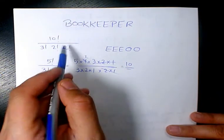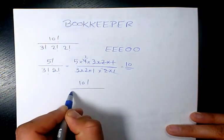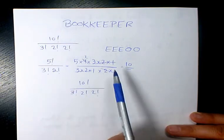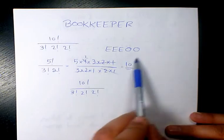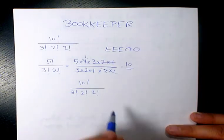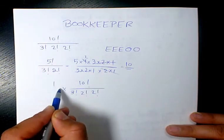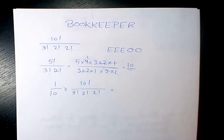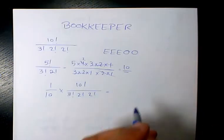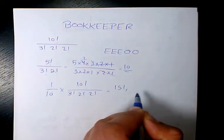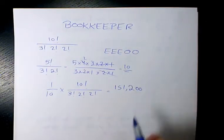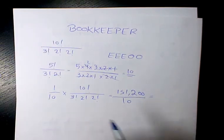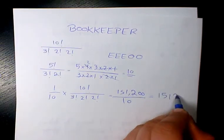So that means we take 10 factorial divided by 3 factorial, 2 factorial, and 2 factorial, and multiply by 1 over 10. That gives us 151,200 divided by 10, which is 15,120.